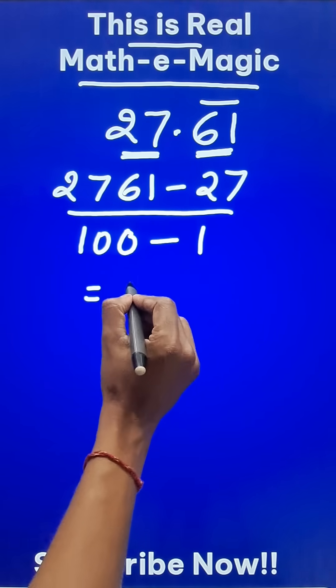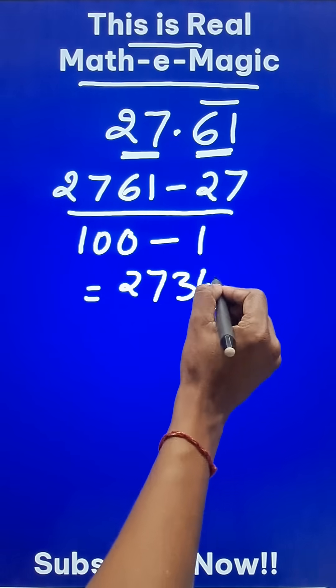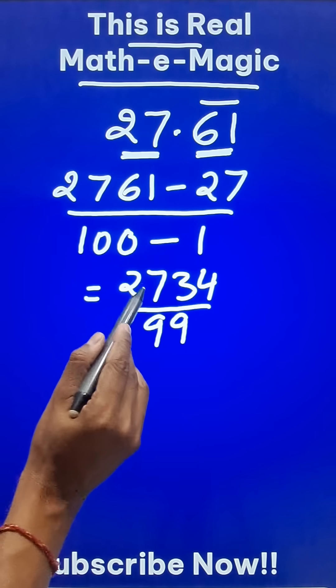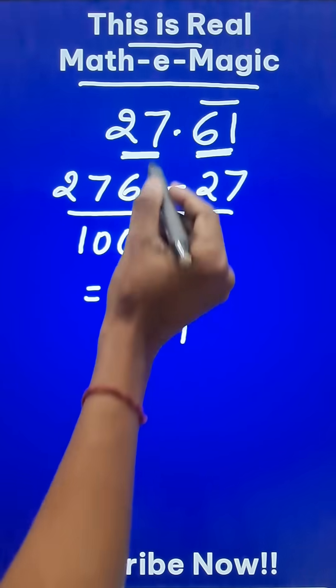So you will get the answer as 2734 in the numerator and 99 in the denominator, and you can check this actually is the rational form of 27.61 bar.